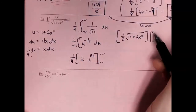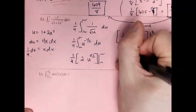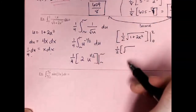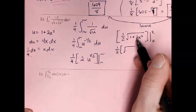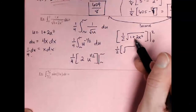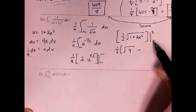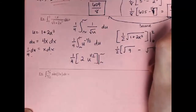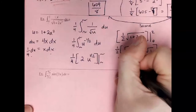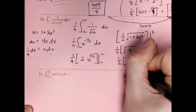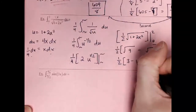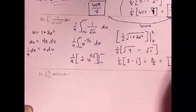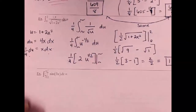Plug in x = 2: 2² = 4, times 2 is 8, plus 1 is 9. Plug in x = 0: 0² = 0, times 2 is 0, plus 1 is 1. So we get (1/2)(√9 − √1) = (1/2)(3 − 1) = (1/2)(2) = 1. The answer is 1 — I love it when it comes out nice.